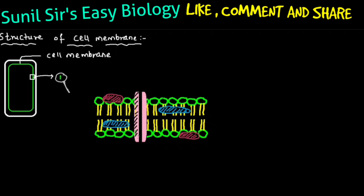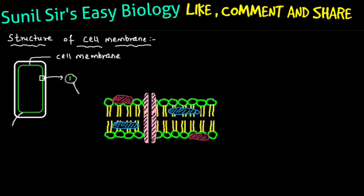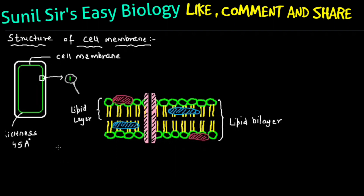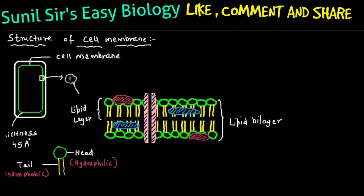The red-colored structure is external protein, the blue-colored one is internal protein, and the pink-colored one is tunnel protein. The cell membrane is 45 angstroms thick. Since there are two lipid layers, it is called a lipid bilayer structure. The plasma membrane of eukaryotes is a lipid bilayer structure. Each lipid layer consists of one polar hydrophilic head and two non-polar hydrophobic tails.